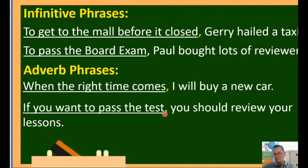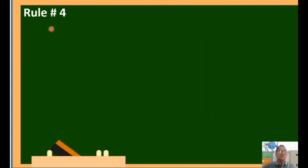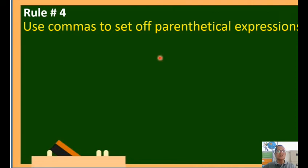'If you want to pass the test, you should review your lessons.' The adverb phrase is 'if you want to pass the test,' beginning with 'if.' This type of phrase is also called a dependent or subordinate clause. When the dependent clause comes first, use a comma. When the independent clause comes first — 'You should review your lessons if you want to pass the test' — no comma is needed. That is the rule.